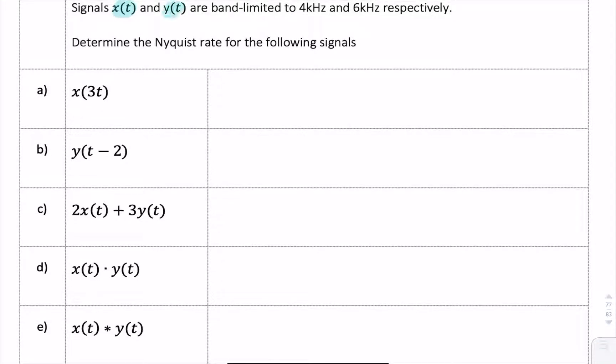Here we have two signals X and Y band limited to 4 and 6 kilohertz, and we're asked to find the Nyquist rate of different combinations of these two signals. So it would help to start by sketching the spectrum of each of these signals.